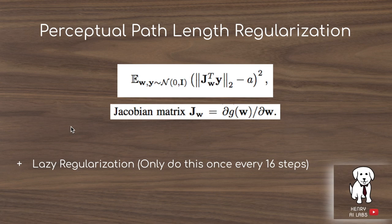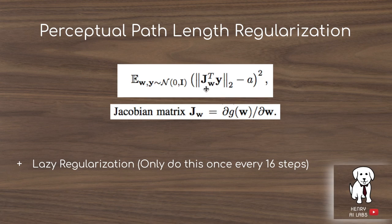The way they implement perceptual path length regularization is a little confusing, but the high-level overview is that they have a Jacobian matrix J sub W, which captures the partial derivatives of the output with respect to small changes in the latent vector. They use these small changes and this Jacobian matrix to see how much small changes affect the image, and multiply it by a random image Y — sampled randomly at each iteration to avoid spatial location dependency. They take the L2 norm of this matrix, subtract an exponential moving average of it, and use this to regularize the perceptual path length so that changes in Z don't result in dramatic changes in the generated image.